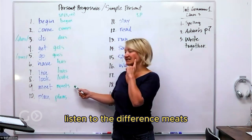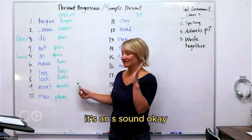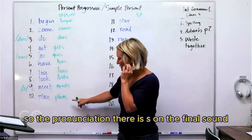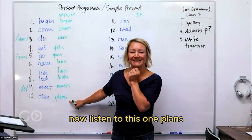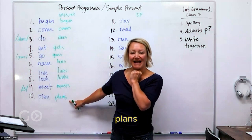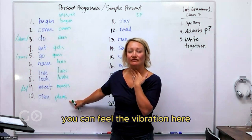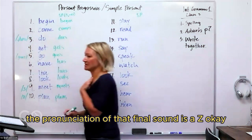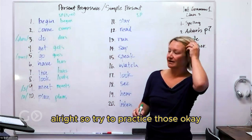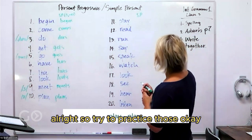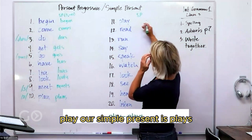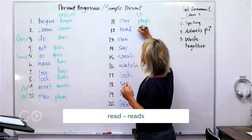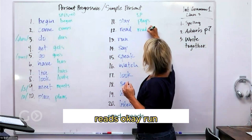Meet simply is meets. Plan is plans. Now remember what we talked about with the pronunciation of these final S's. Listen to the difference: meets, it's an S sound. The pronunciation, there's S on the final sound. Now listen to this one: plans. You can feel the vibration here. The pronunciation of that final sound is a Z.